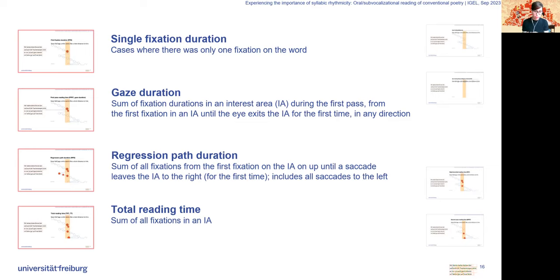Regression path duration is the sum of all fixations from the first fixation on the interest area up until a saccade leaves the interest area to the right for the first time, and it includes all saccades to the left. Total reading time is the sum of all fixations in an interest area.